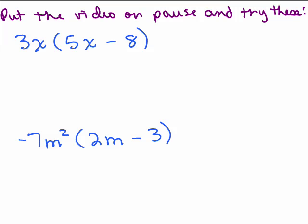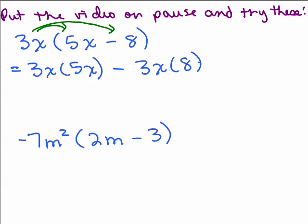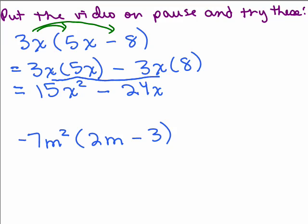Here are two for you to try — put the video on pause and try these, then come back. We distribute 3x to both terms inside the parentheses. 3x times 5x minus 3x times 8. 3 times 5 is 15, x times x is x squared, so 15x squared. Then 3 times 8 is 24, giving minus 24x. The answer is 15x squared minus 24x.